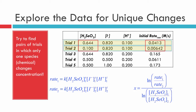Using log algebra, we take the natural log of both sides, bring x down, rearrange, and solve for x. You don't need to repeat all that algebra on a test, but you do need to know the resulting equation: the order for any particular species equals the natural log of the ratio of rates divided by the natural log of the ratio of concentrations. For example, to find y using trials four and five, we'd write: y = ln(rate₄ / rate₅) / ln([I⁻]₄ / [I⁻]₅).